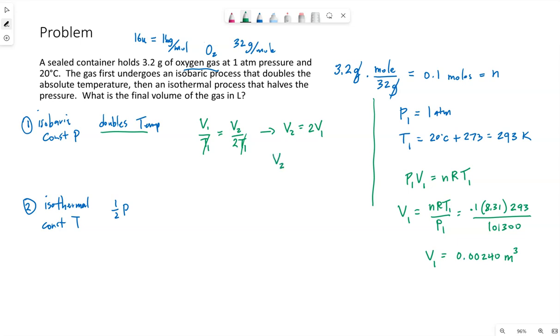So after this first, at the end of this first process, our volume is doubled. So 0.0048 meters cubed, which in the long run they want this to be in liters. So let's go ahead and put that in liters. We multiply by 1,000 because 1 meter cubed is 1,000 liters.